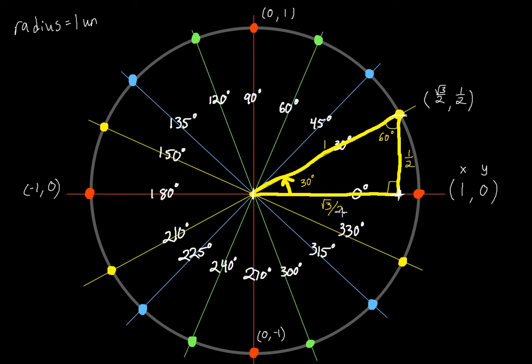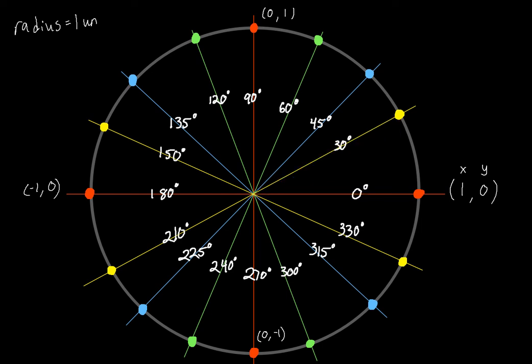What I'd suggest is finding a fill-in-the-blank unit circle and drawing out all those triangles. If you like different colors, get yourself a colored pencil — it works really well when you're first learning the unit circle. So what we discovered is that the coordinate point at 30° is going to be (√3/2, 1/2).